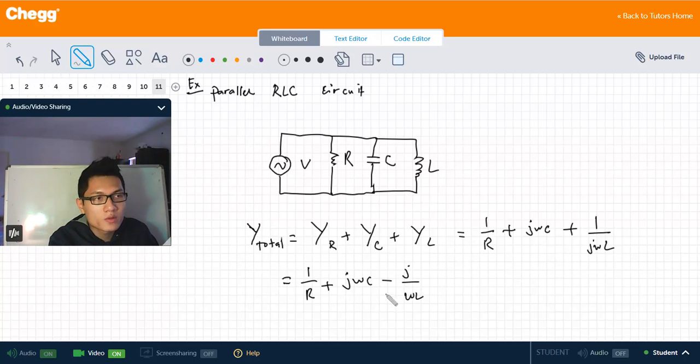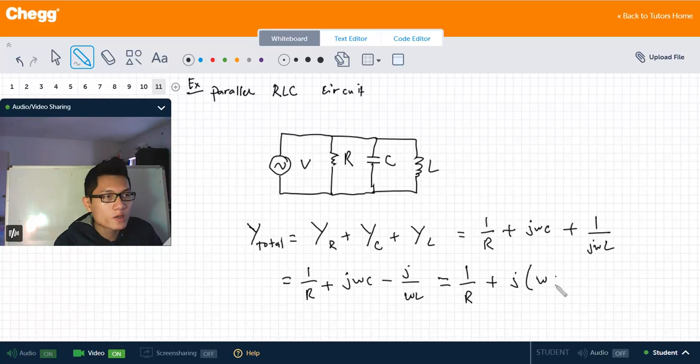The reason I want to bring the j to the top is because I want to factor the j out, so we can have 1 over R plus j times (ωC minus 1 over ωL).